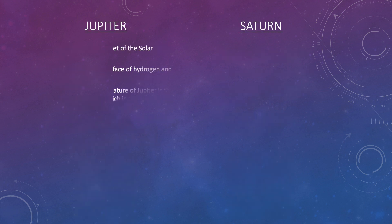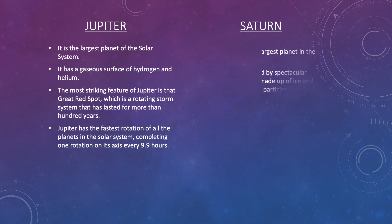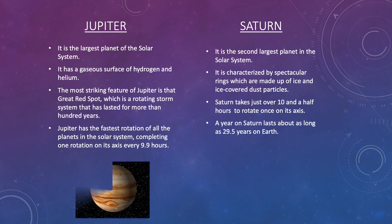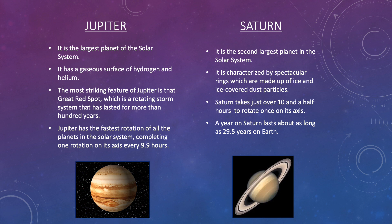Jupiter is the largest planet of the solar system. It has a gaseous surface of hydrogen and helium. The most striking feature of Jupiter is the Great Red Spot, which is a rotating storm system that has lasted for more than 100 years. Jupiter has the fastest rotation of all the planets in the solar system, completing one rotation on its axis every 9.9 hours.